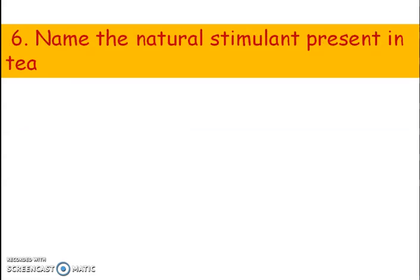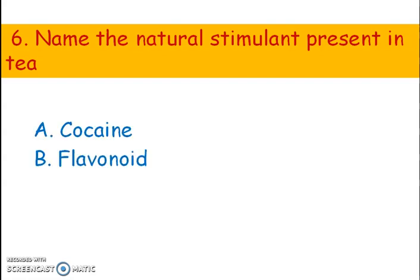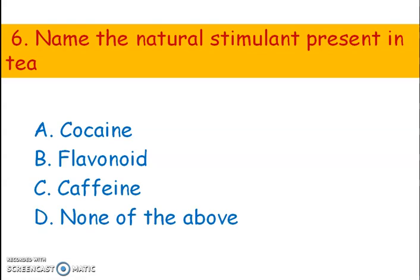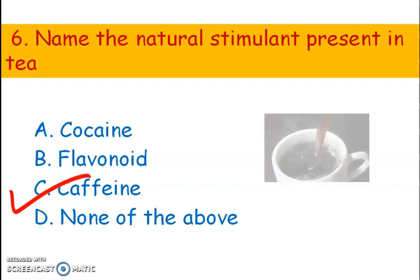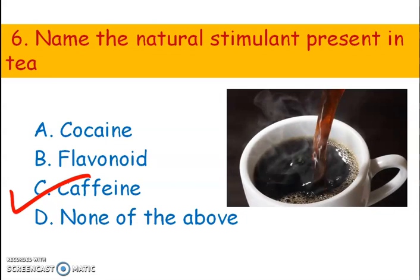Next question. Name the natural stimulant present in tea. Options: A) Cocaine, B) Flavonoid, C) Caffeine. The right answer is option C, caffeine. Caffeine is a natural stimulant — it is a central nervous system stimulant. It is naturally also present in coffee and cocoa.